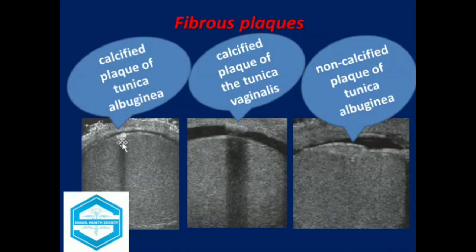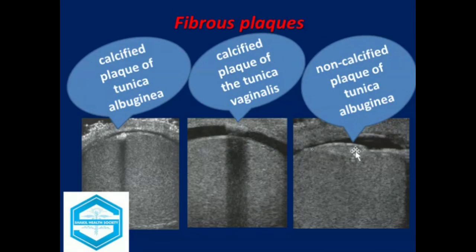This is the calcified plaque of the tunica albuginea, while this is the calcified plaque of the tunica vaginalis. This is a non-calcified plaque of the tunica albuginea.